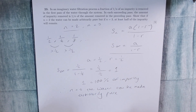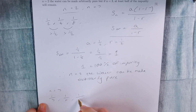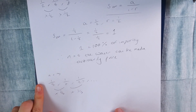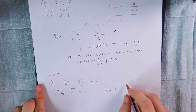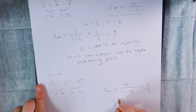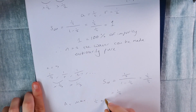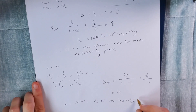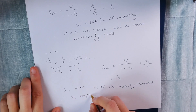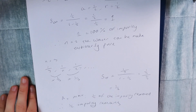Therefore, when n is equal to 2, the water can be made arbitrarily pure, because we've removed all of the impurity. Now let's consider n is equal to 3. That would be one third, then one third of that third — one ninth, one over 27, and so on. Using the same logic, our ratio this time is a third and our first term is also a third. Summing to infinity: one third over one minus a third equals one third over two thirds, which equals one half. So at max, we can only remove half of the impurity. Therefore, at least half of the impurity will remain even after infinite passes, which is what the question stated.